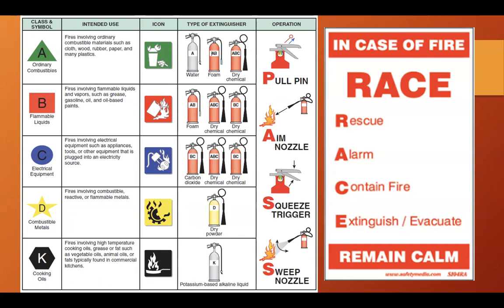To operate the fire extinguisher, remember the acronym PASS: P — Pull the pin. A — Aim the nozzle towards the source of fire. S — Squeeze the trigger. S — Sweep the nozzle to make sure you cover the base or source of the fire. There are different types of fire extinguishers: Class A, B, C, D, and K, depending on the source of the fire.